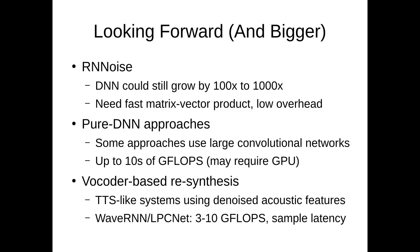But at the same time, it requires processing at the sample level, which means that many GPUs will not be able to process that in real time and we will actually need a CPU, because we need to compute the network for every single sample at 16 or 24 or 48 kilohertz in the future.